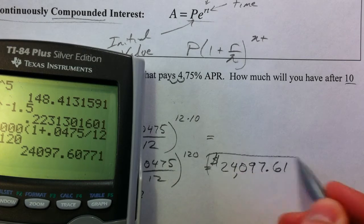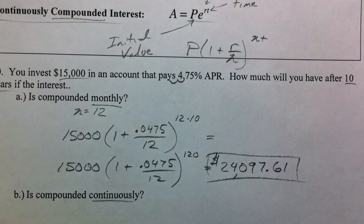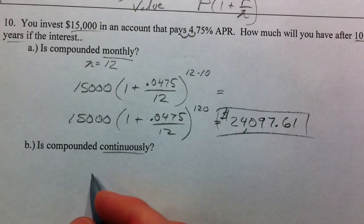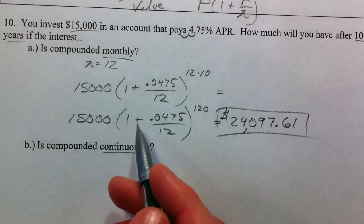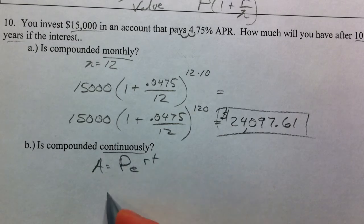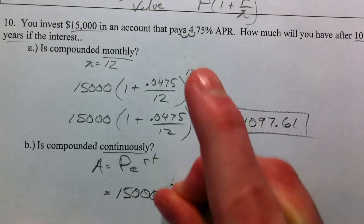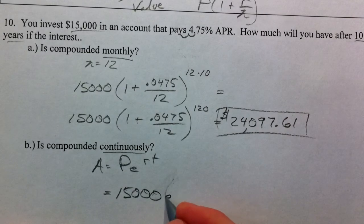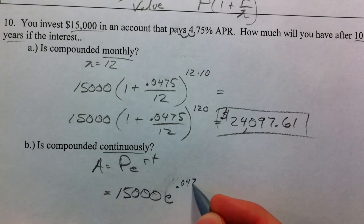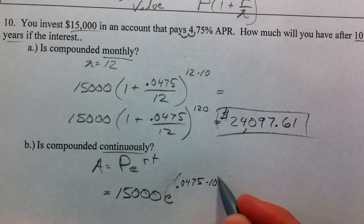That gives us $24,000.97. And if it's compounded continuously, we can expect to make a little bit more. That's the PERT equation: A equals P times E to the RT. So that's your $15,000 times E — which is that natural number, it's not a variable, don't get confused — and 0.0475 is our rate times our time of 10 years.